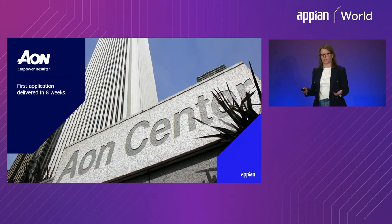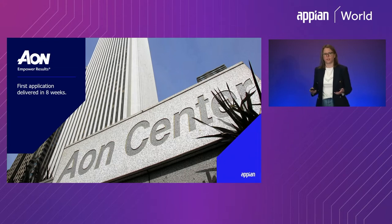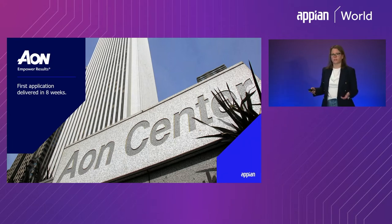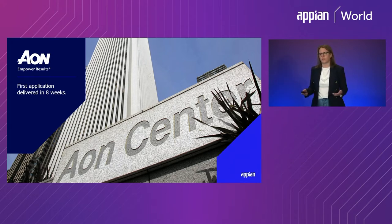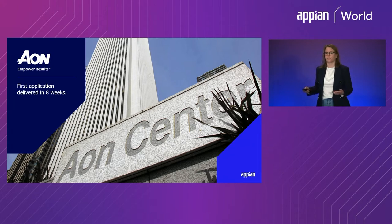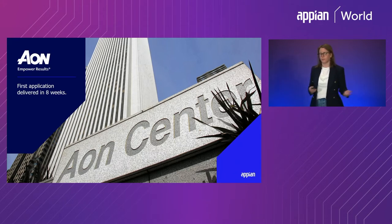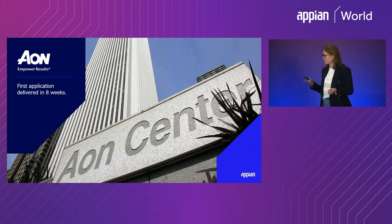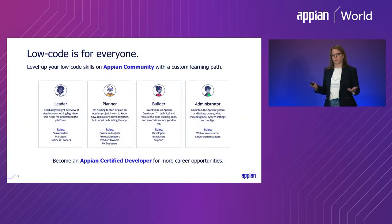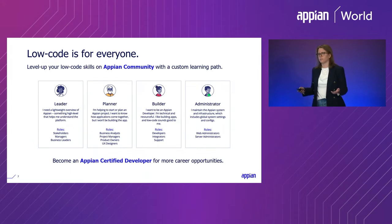Here's a particular customer story that I really like. Aon is a global professional services company that does consulting on risk, retirement, and healthcare services for clients all over the world. Aon called on Appian to automate their claims process — mission critical, really important part of their business. This application was delivered in eight weeks. This was really impressive for not just some side project, but something critical to their business. Today, 30 users at Aon use this application internally to manage their process, but they also use it to communicate with all their clients externally. You, too, can deliver these results for your company or your client by adopting low code.